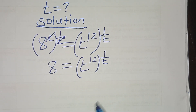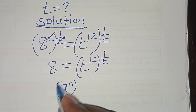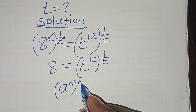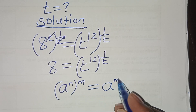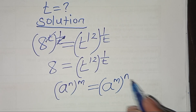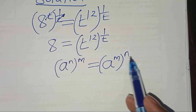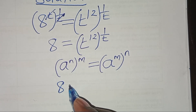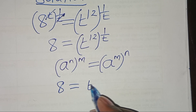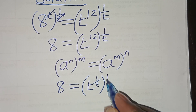The next step is applying the exponent property that 8 to the power n, raised to the power m, can be expressed as 8 to the power m raised to the power n. Applying this, we have 8 is equal to t to the power (1 over t), raised to the power 12.